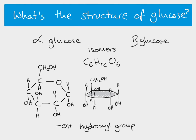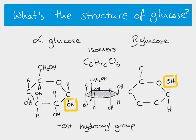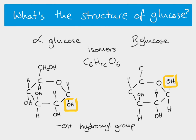Beta glucose is almost identical — it has the same ring structure — but the difference is that the hydroxyl group on carbon one is above the carbon ring and the hydrogen is below, which is the opposite of alpha glucose. Everything else is exactly the same. So there we have our two structures, and you do need to be able to draw both of them. Thank you very much.